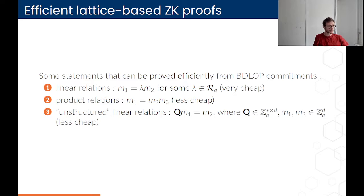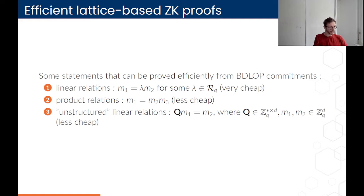And finally, you can prove unstructured linear relations — called unstructured because here you prove that Q·M1 equals M2, where Q is a matrix over Z_Q. So you kind of forget about the R_Q structure of M1 and just consider it as a list of coefficients, and M2 as well. This also can be proven for pretty cheap, and these statements will be useful later.